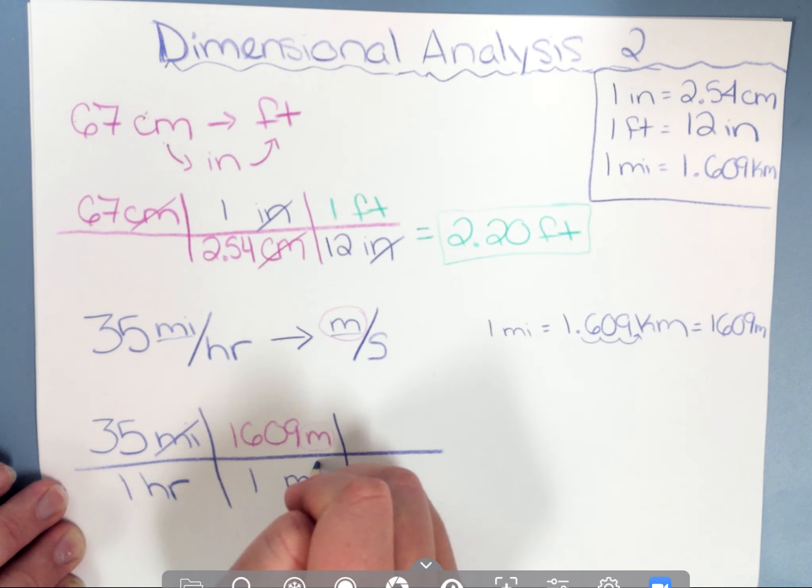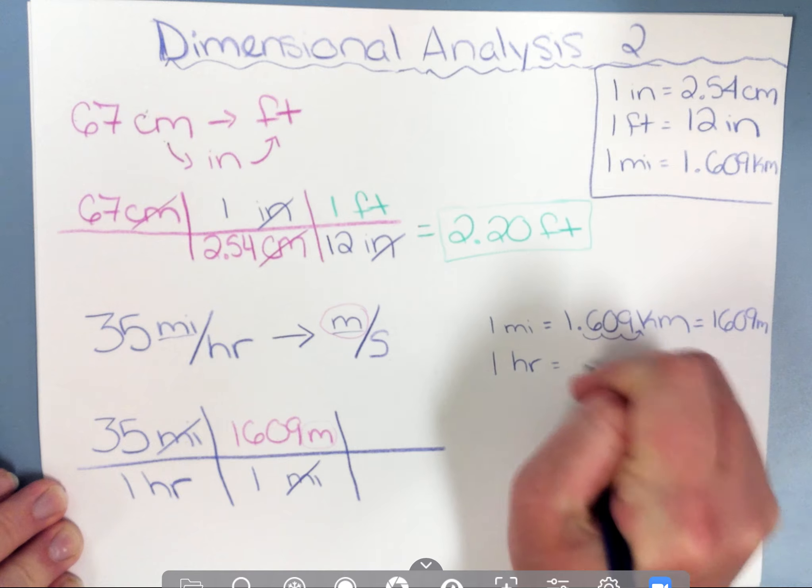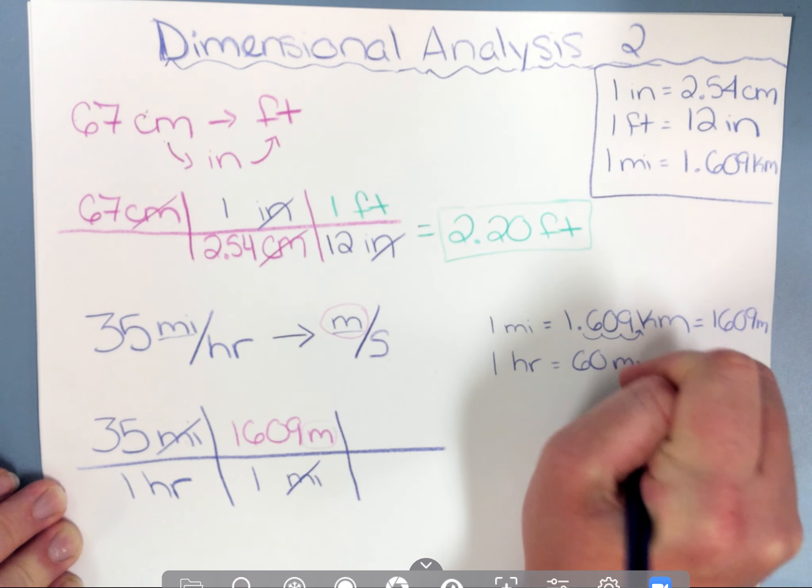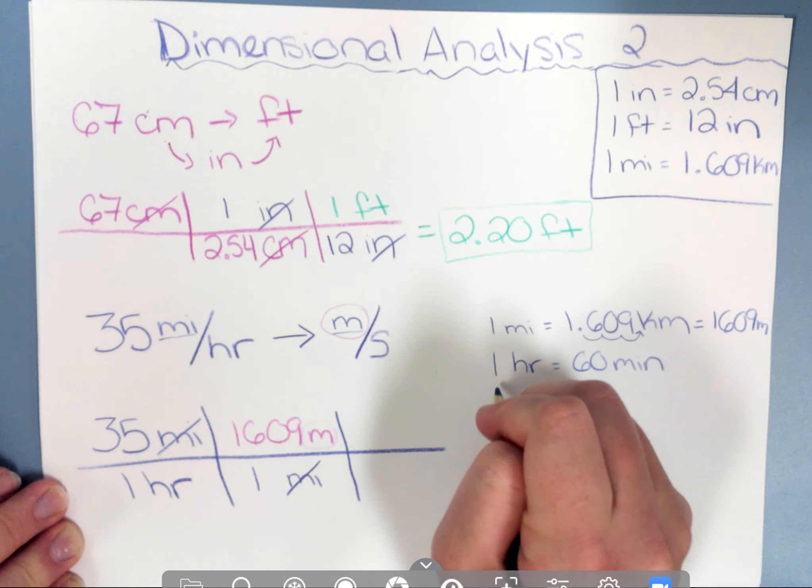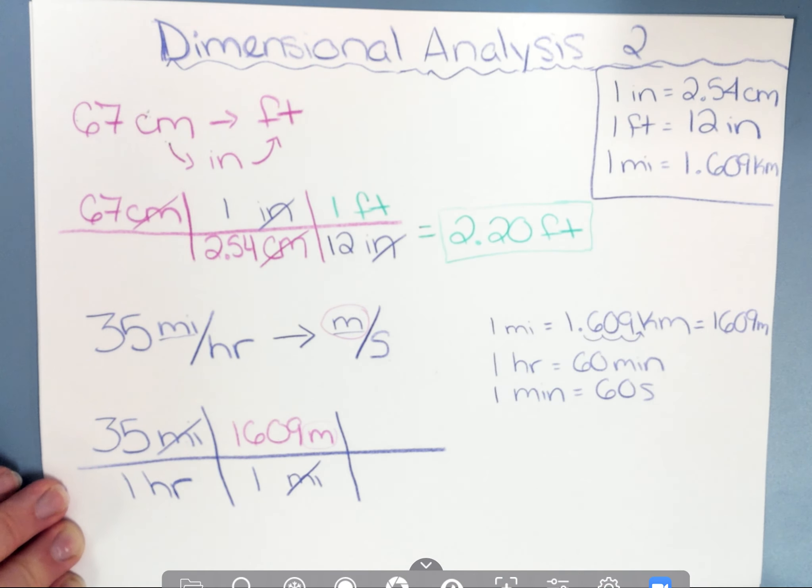So now I'm at meters per hour. So we've got to fix that. Now do I know necessarily how many seconds are in an hour? Maybe not. But I do know that one hour is 60 minutes, and one minute is 60 seconds. Based on that, I can now do two additional steps. So I'm going to put one hour on top.